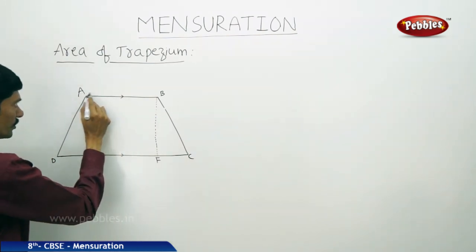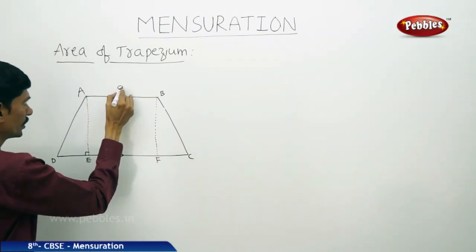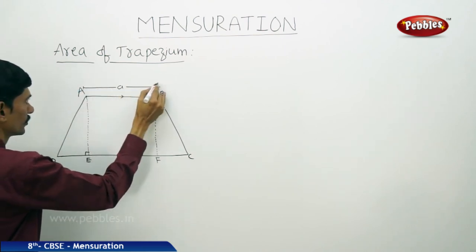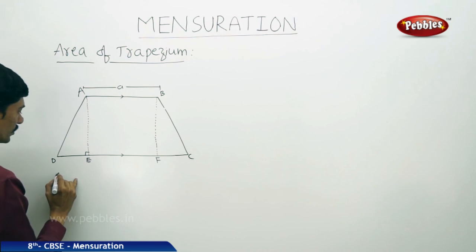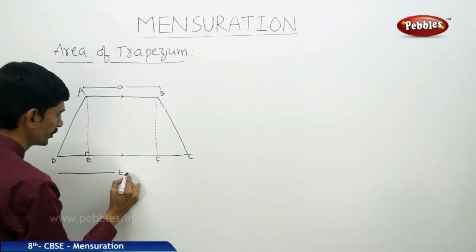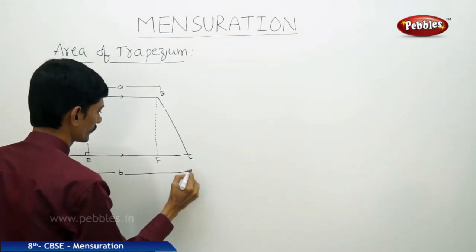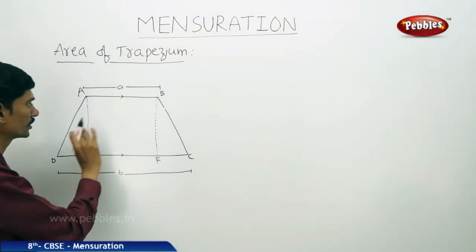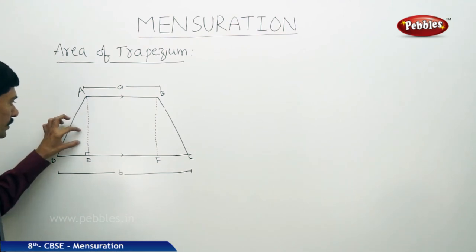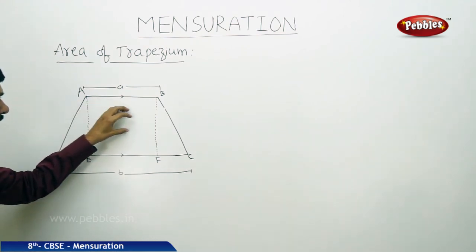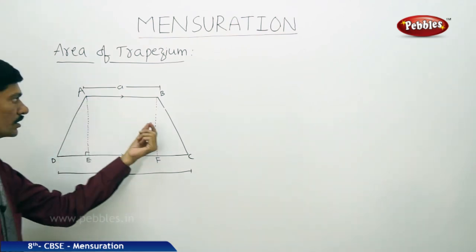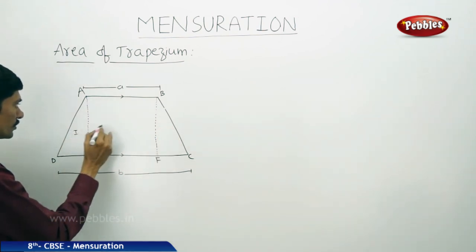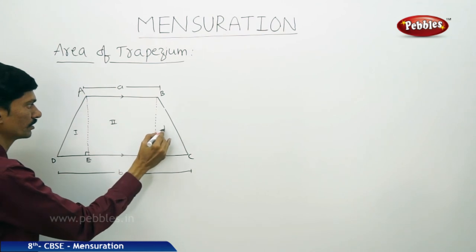The sides of the trapezium are AB equals A units and DC equals B units. By drawing these two perpendicular lines, the trapezium is divided into three parts: the first part is a right triangle, the second part is a rectangle, and the third part is also a right triangle.